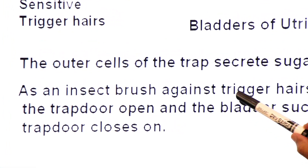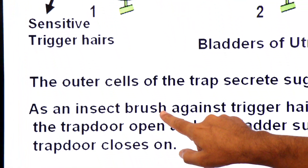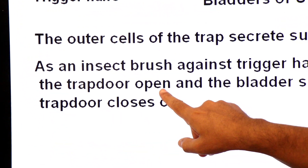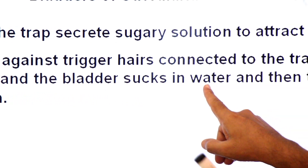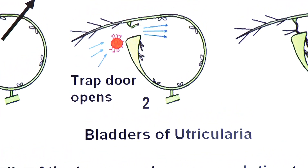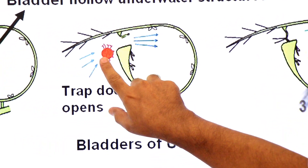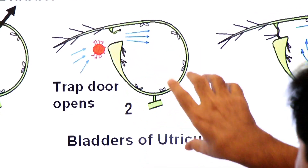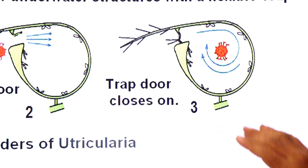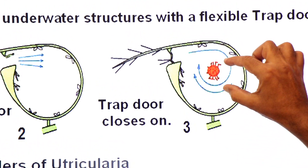As the insect brushes against the trigger hairs connected to the trap door, the trap door opens and the bladder sucks in water and the insect. Then the trap door closes. Inside, digestive glands secrete digestive enzymes and the insect is digested here. Looking at the diagram: the trap door opens, the insect is sucked in with water, the door closes, and digestion occurs.